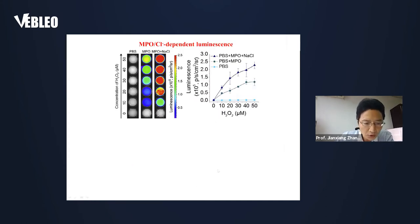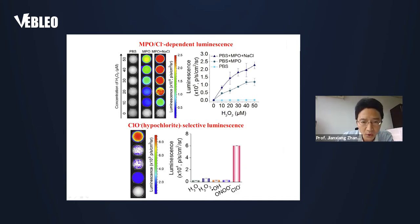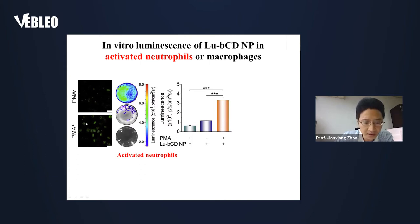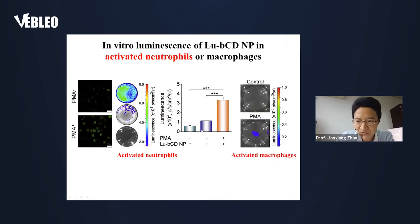We also found that the luminescence behaviors of this nanoprobe depend on the levels of MPO, chloride ions, and hypochlorite. Based on cell culture studies, we demonstrated the nanoprobe can selectively illuminate activated neutrophils, such as PMA-stimulated neutrophils, but not macrophages, because macrophages do not express MPO.